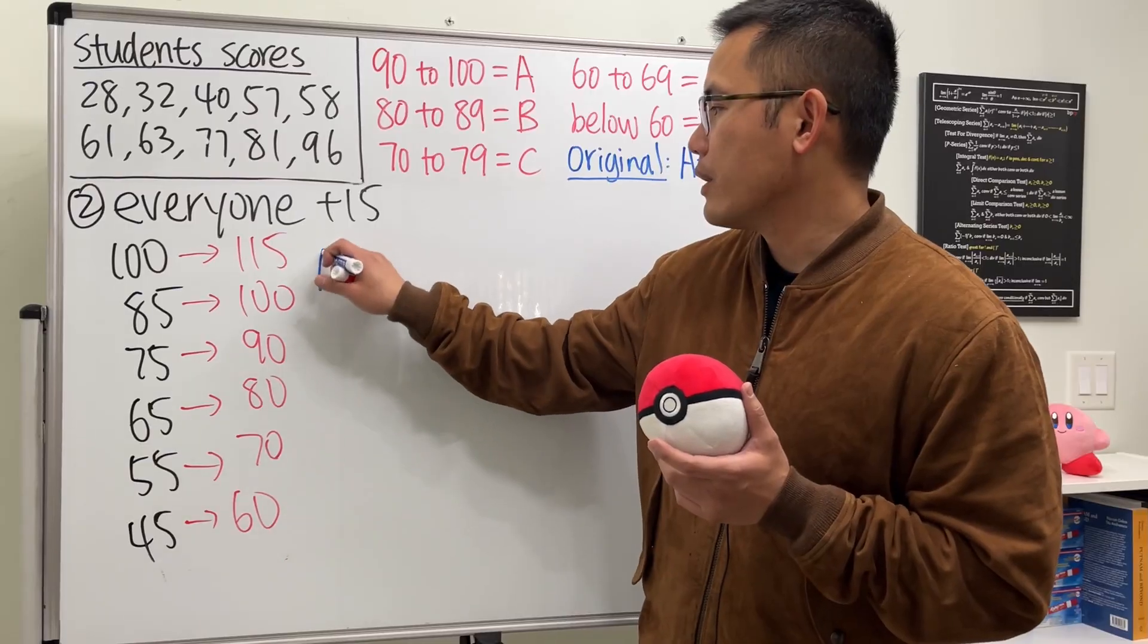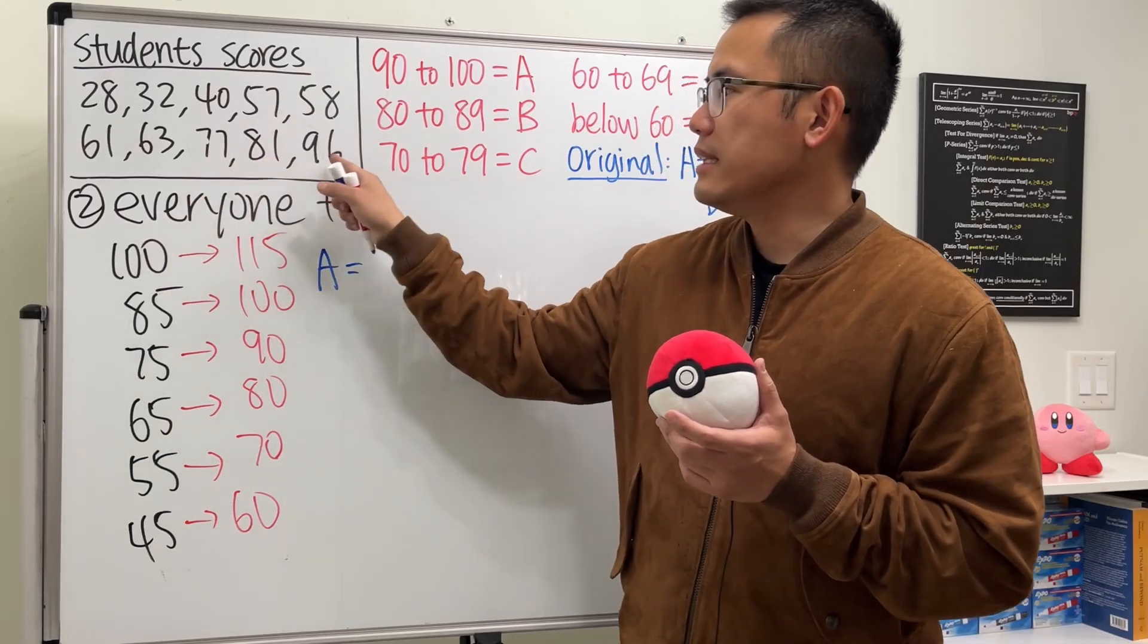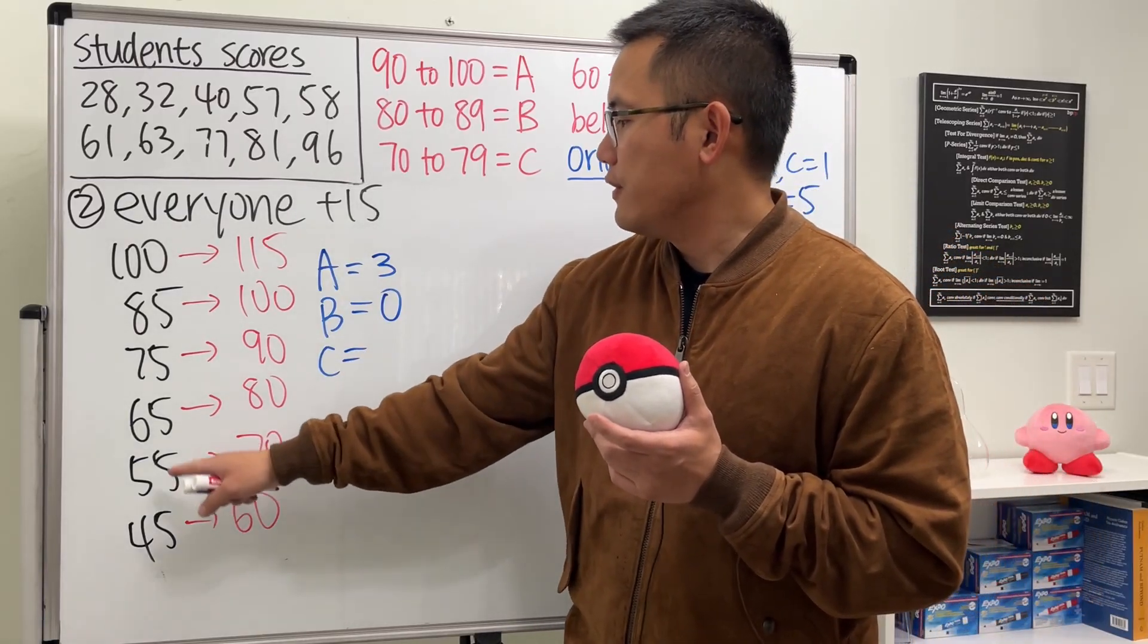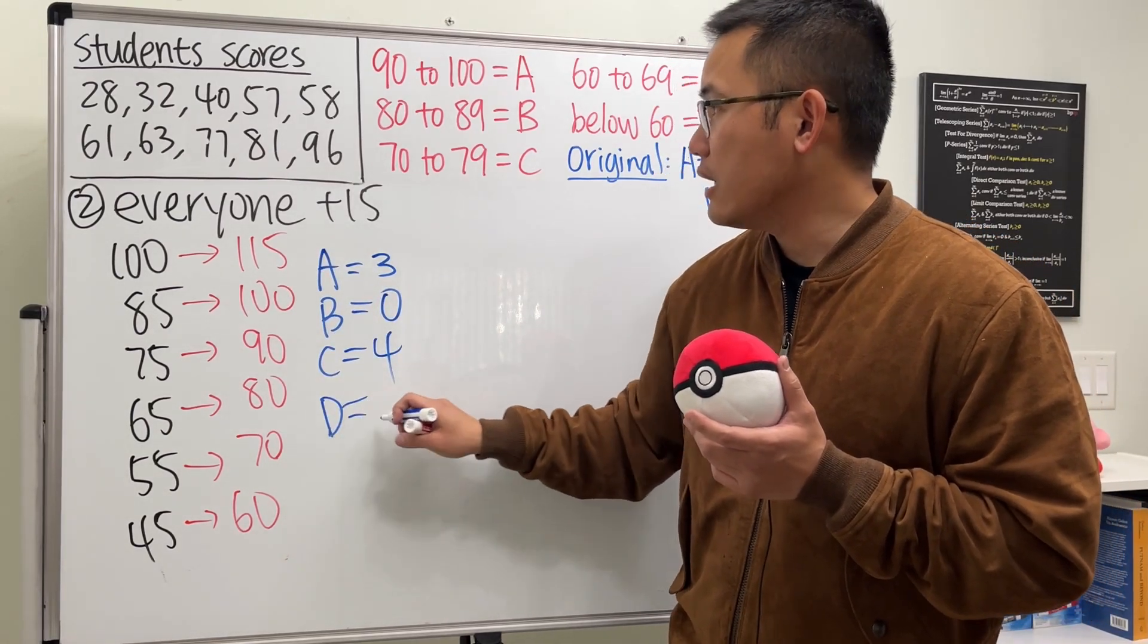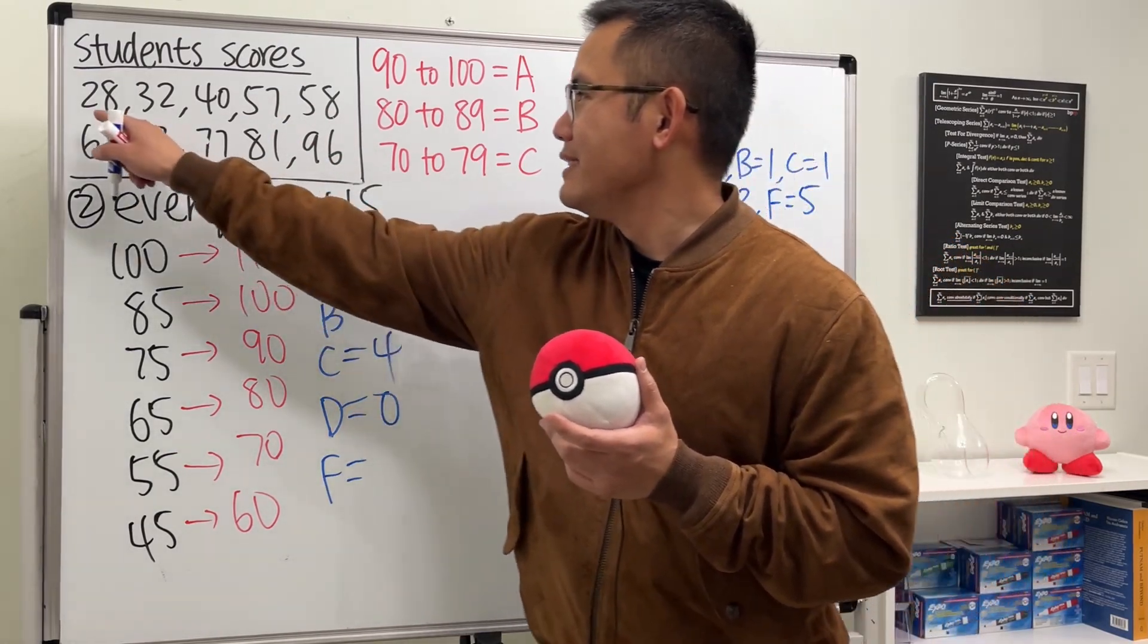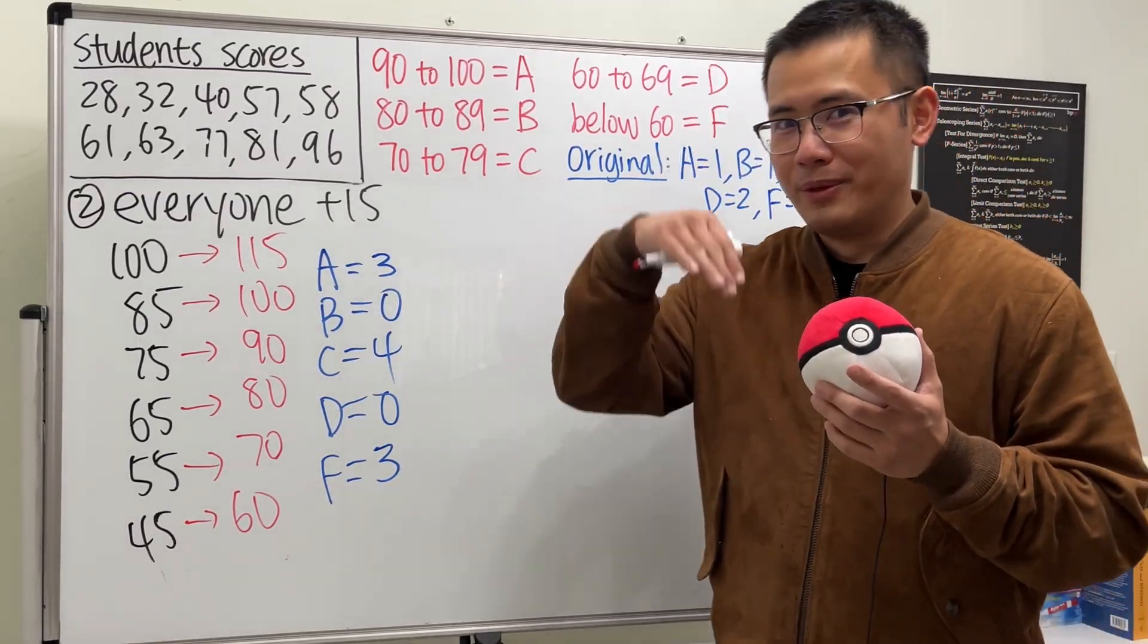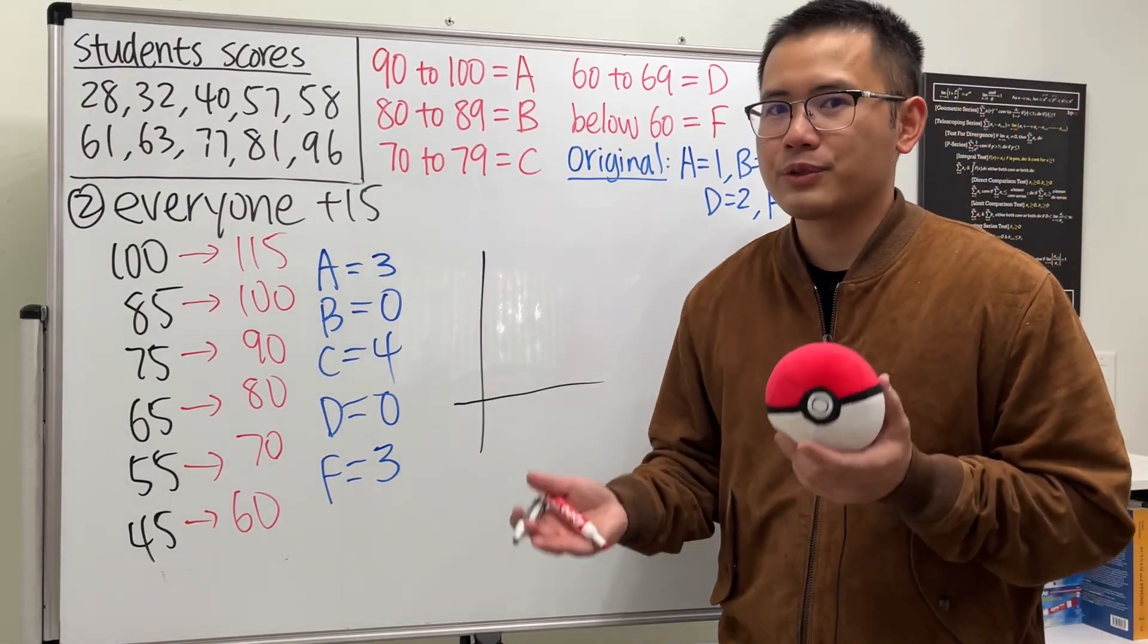This is going to be super fair in this sense. Everybody has that 15 points extra credit. And now let's just take a look real quick how many As, Bs that we are going to have. For As, we're looking at 75 or above. So we have this, this, and that. We have three As now. And let's see how many Bs. 65 to 75. No Bs. And then C, 55 to 65, so we're talking about this, this, this, and that. So four Cs. And D, we have no Ds. And lastly, we have this, this, and that. They are still going to get the F. So this is pretty like normal. And of course, this works perfectly because everybody gets 15 extra credit.